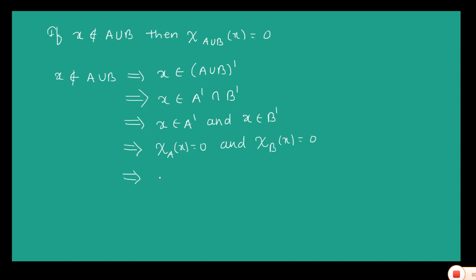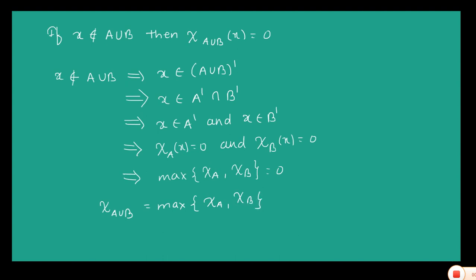When x belongs to A complement, chi_A(x) = 0, and when x belongs to B complement, chi_B(x) = 0. So the maximum of chi_A(x) and chi_B(x) is equal to 0. Therefore in this case also, chi_{A∪B}(x) = max(chi_A(x), chi_B(x)). This is the end of this result.